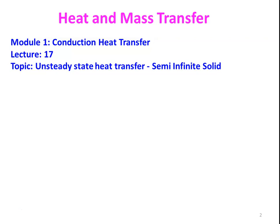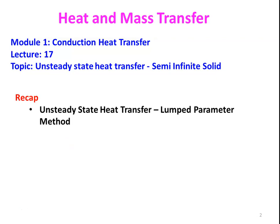The topic for today's discussion is unsteady state heat transfer in semi-infinite solid. In the previous lecture, we started the unsteady state heat transfer and discussed the lumped parameter method. In the lumped parameter method, we assume that the thermal conductivity of the material is very high and the Biot number is less than 0.1. When the Biot number is less than 0.1, the internal conduction resistance within the solid is negligible, so everywhere within the solid the temperature will be constant, and there will be a convection heat transfer resistance from the outside surface.